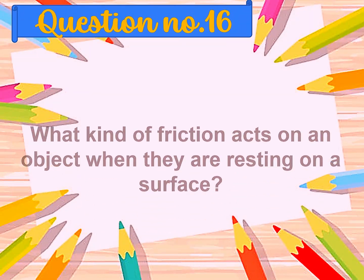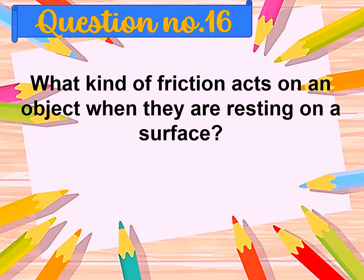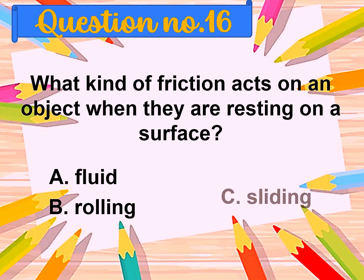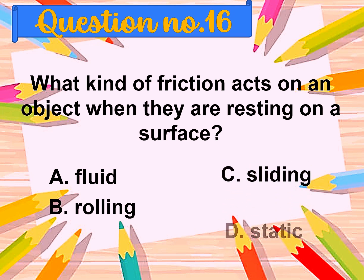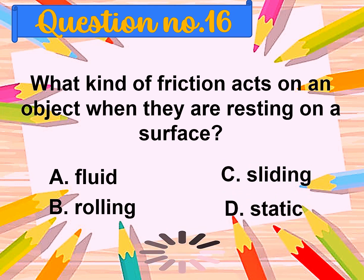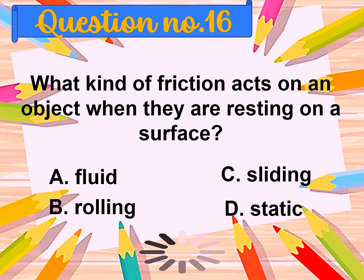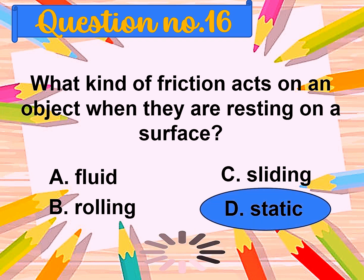Question number sixteen: What kind of friction acts on an object when it is resting on a surface? A. Fluid, B. Rolling, C. Sliding, D. Static. The correct answer is static.